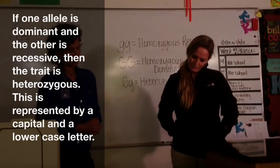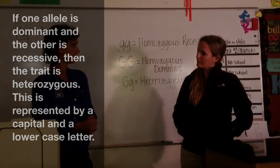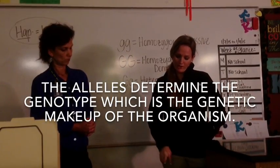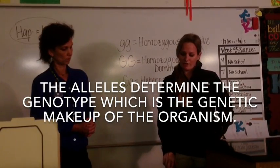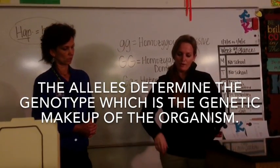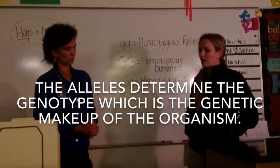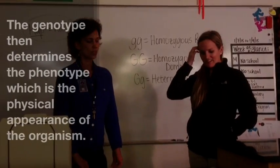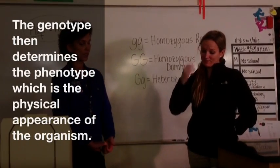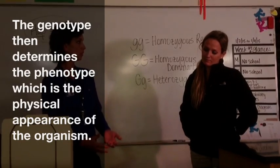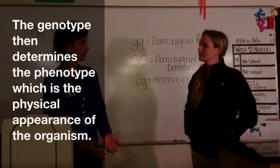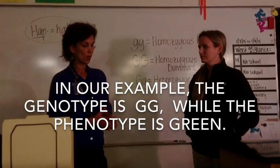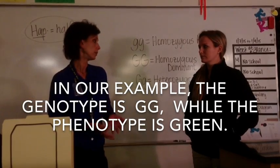So does heterozygous describe the genotype of the organism? Yes. The alleles determine the genotype, which is the genetic makeup of the organism. The genotype then determines the phenotype, or physical appearance, of the organism. So a genotype is the letter, and a phenotype is the physical look of the organism. The genotype would be GG, while the phenotype would be green. Exactly.